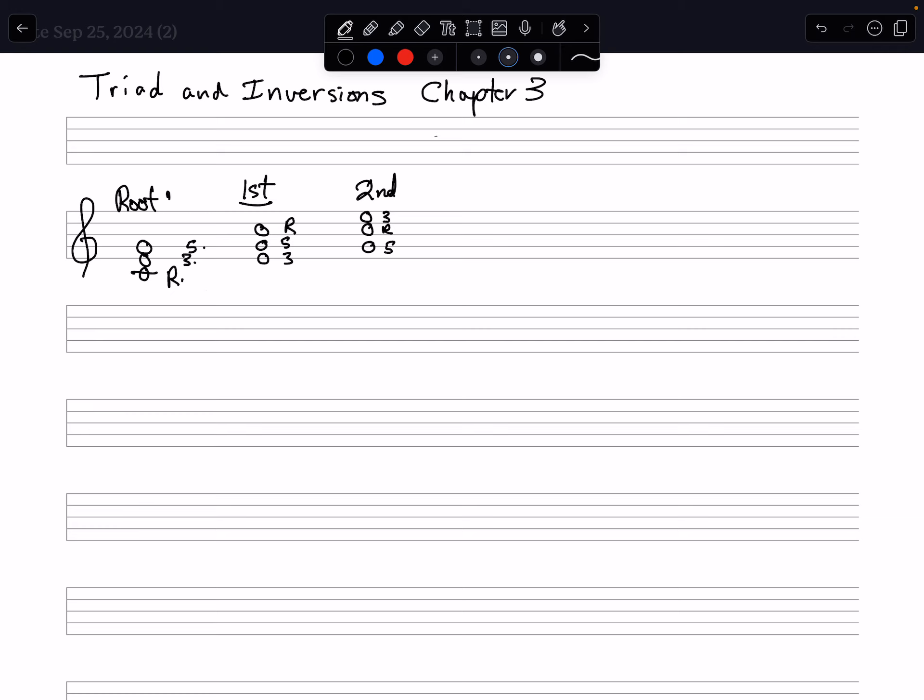This gives us root position, first inversion, second inversion. It's a little different when you go to seventh chords because there are now four notes to work with, so I'm going to skip down a little bit.